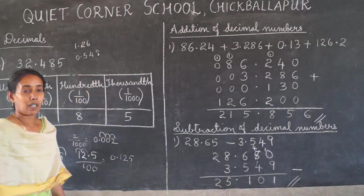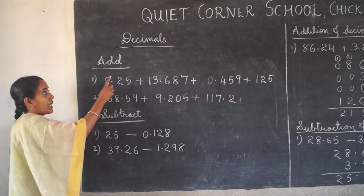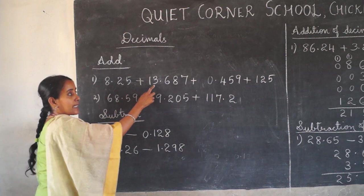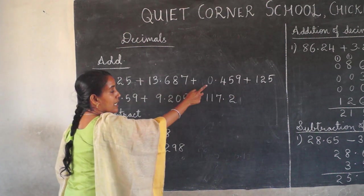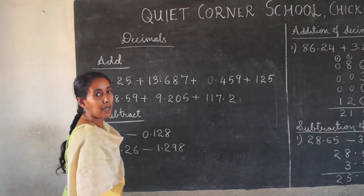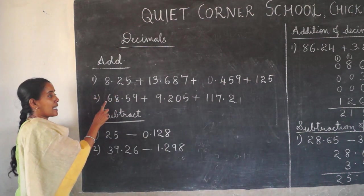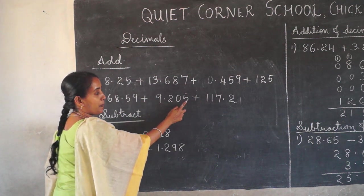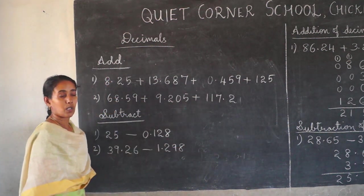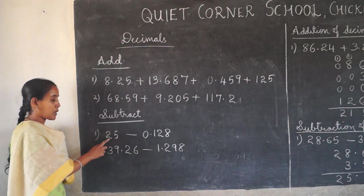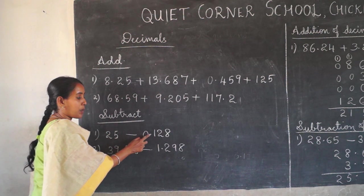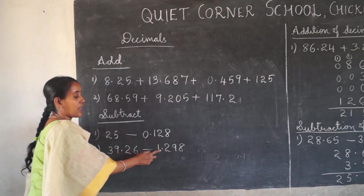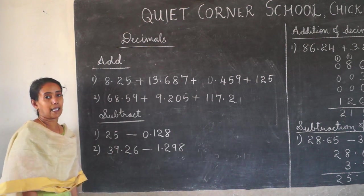Now the homework. Add these decimal numbers: 8.25 plus 13.687 plus 0.459 plus 125. Then: 68.59 plus 9.205 plus 117.2. Then subtract: 25 minus 0.128, and 39.26 minus 1.298.